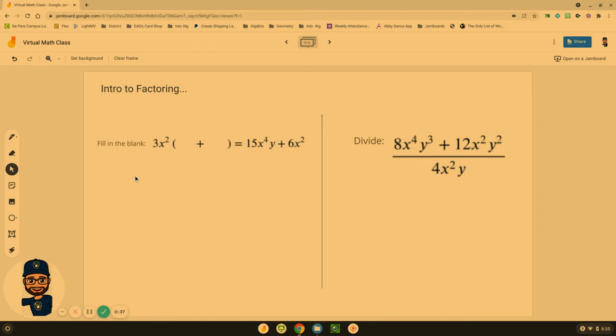The first one over here we've got what we might call a GCF on the outside, 3x², and I'm trying to figure out what do I need to multiply in this blank and this blank to obtain this answer. Which one of the four choices do you think it is? Well if we're looking at it, this first term here is going to end up being multiplied 3x² times something to get that result.